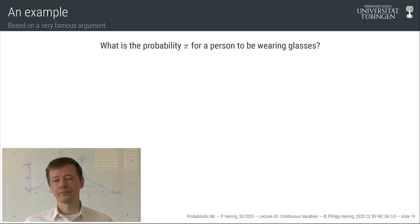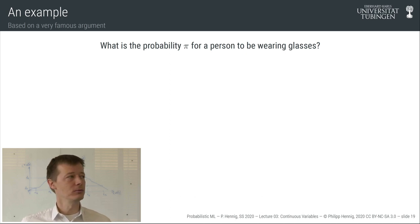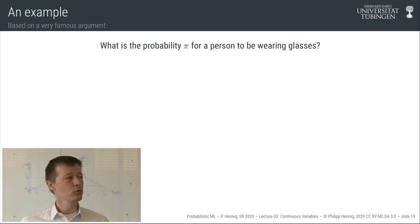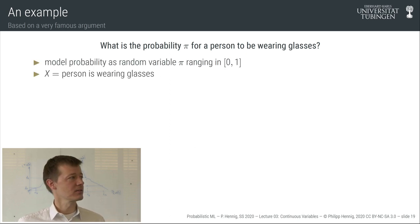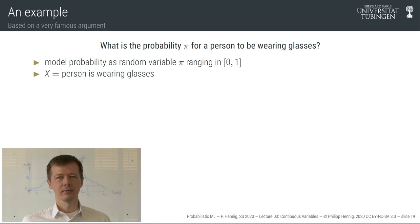Normally I would ask you questions in the lecture hall and have a discussion, but because of COVID we can't do that, so please stop the video and think for yourself. We're going to define a probabilistic generative model for Bayesian inference. We begin by introducing a random variable pi for the quantity we care about — the probability to wear glasses. Pi is a real number between 0 and 1: 0 means nobody wears glasses, 1 means everyone does, 0.5 means half the population does.